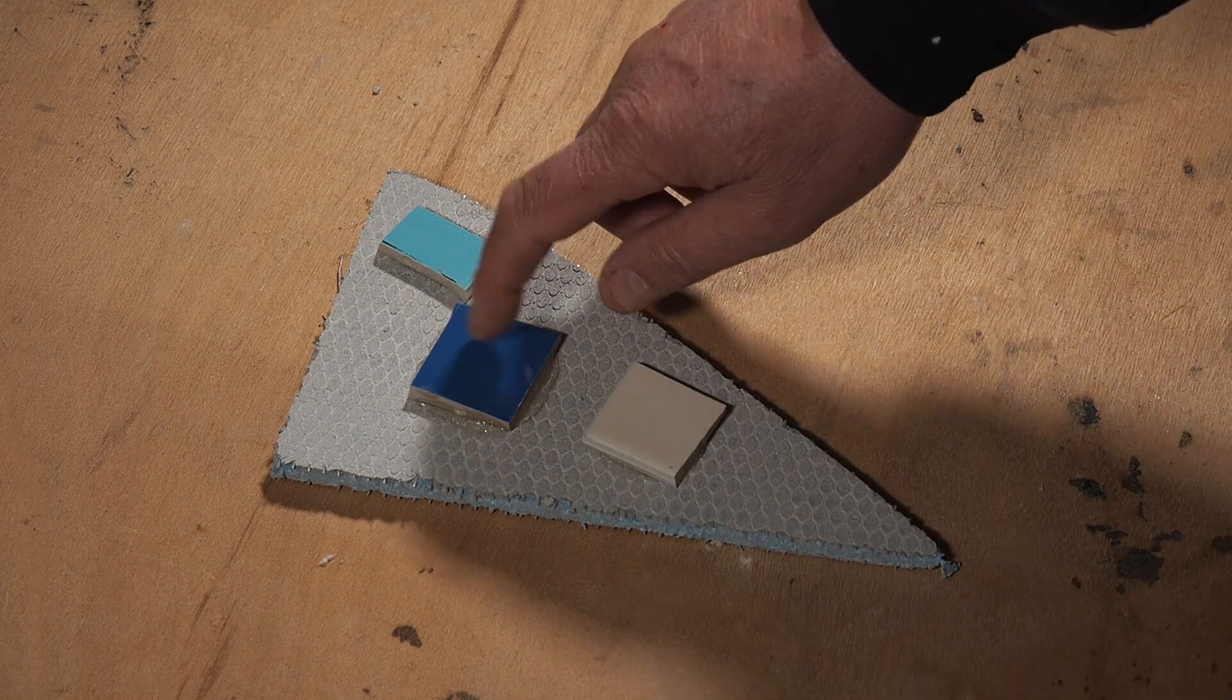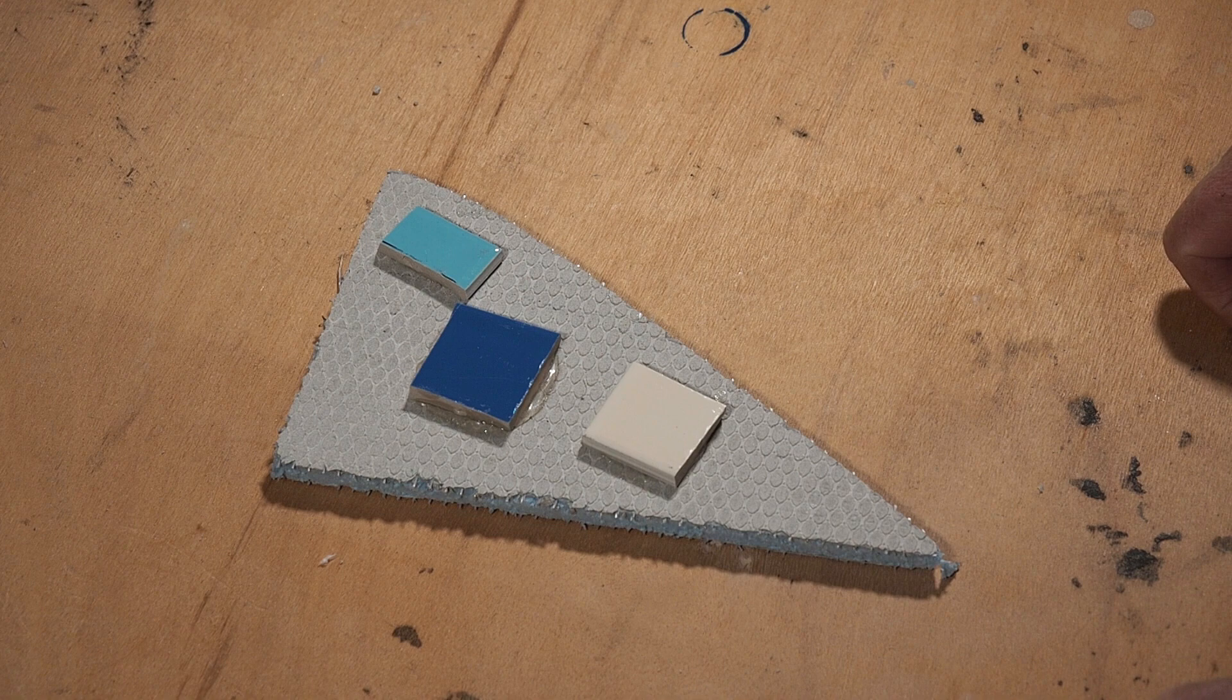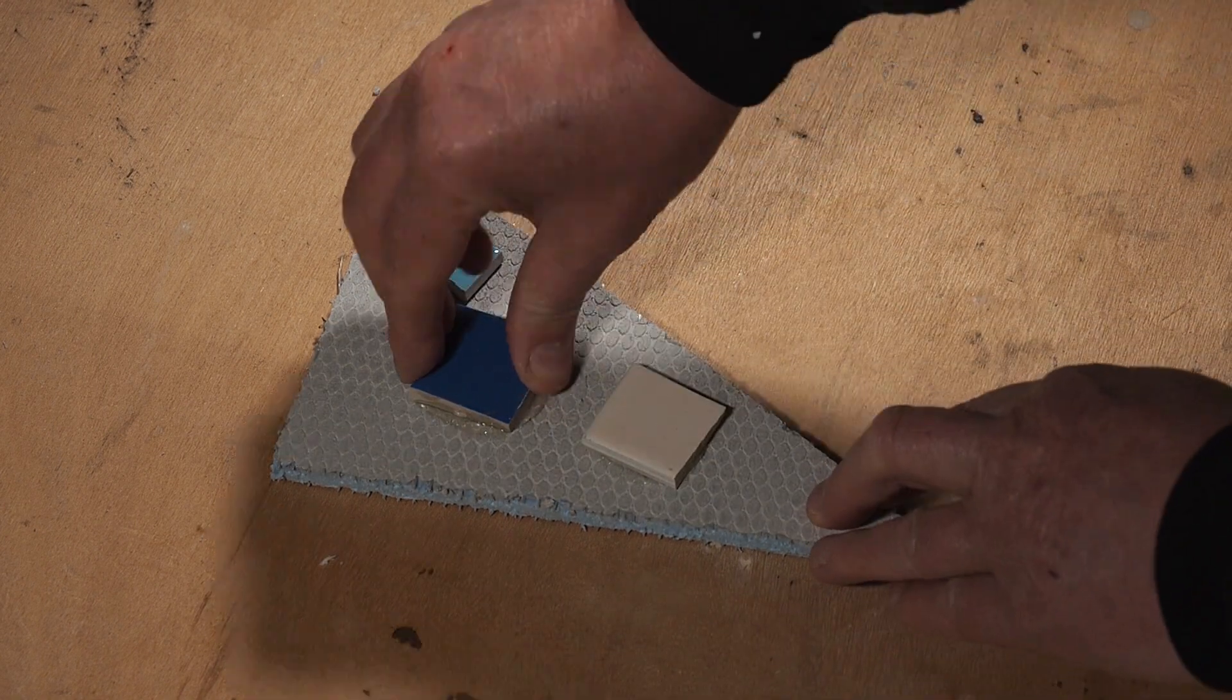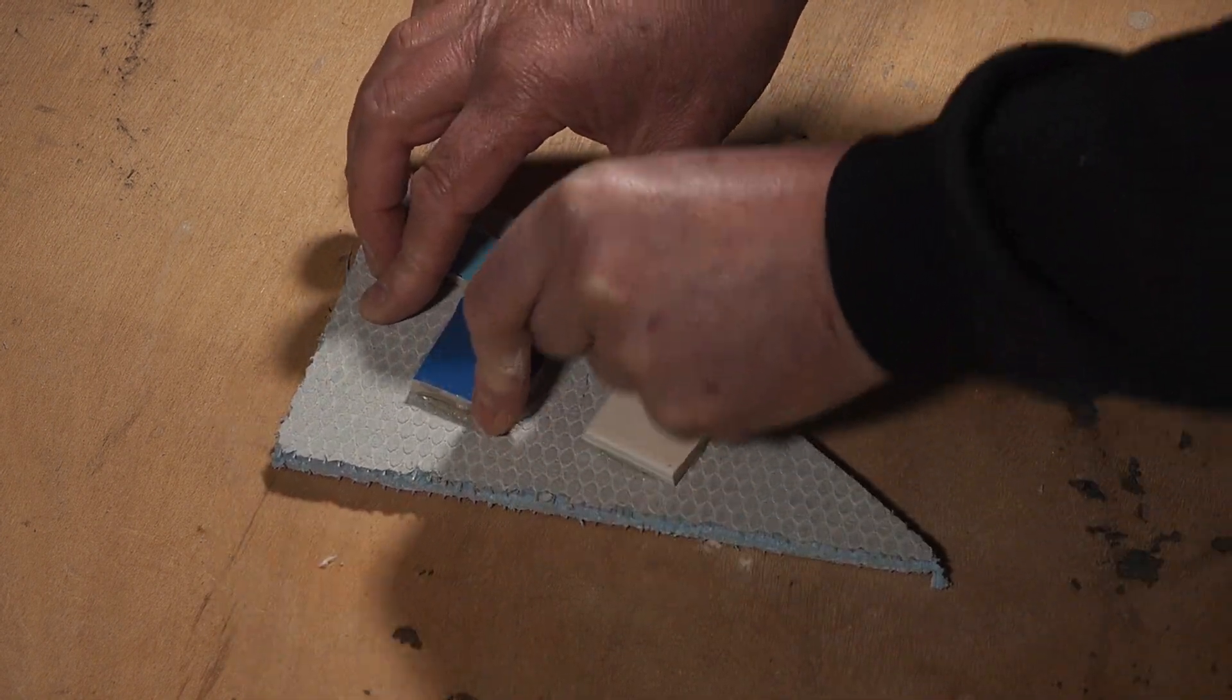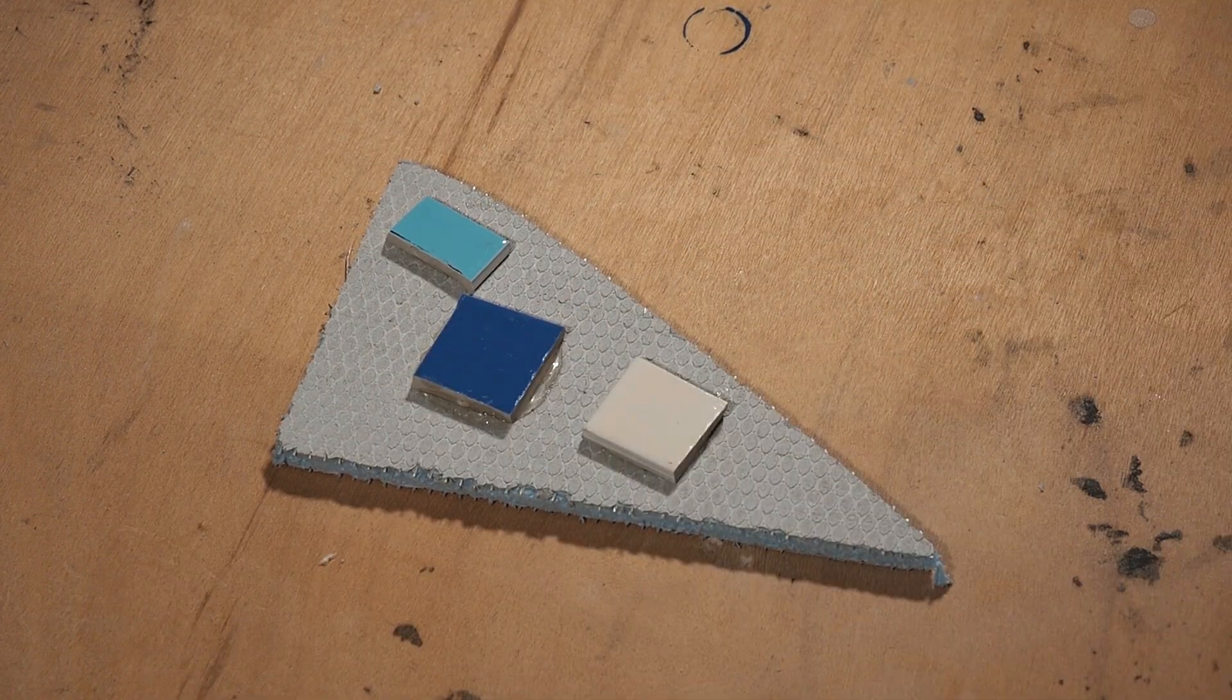So on the first one, which was this one, I used a considerable amount of Prep and that's definitely adhered down, no issues at all. But it's clearly too much adhesive because it's squashing out all the sides.